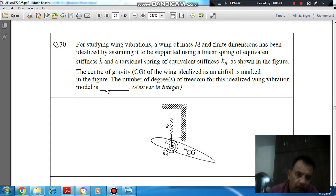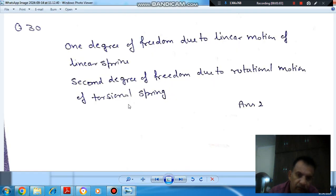Answer: Two. One degree of freedom will be due to this linear spring. The second degree of freedom will be due to this rotational spring. So the answer is two: one due to linear motion of the linear spring and the other due to rotational motion of the torsional spring.